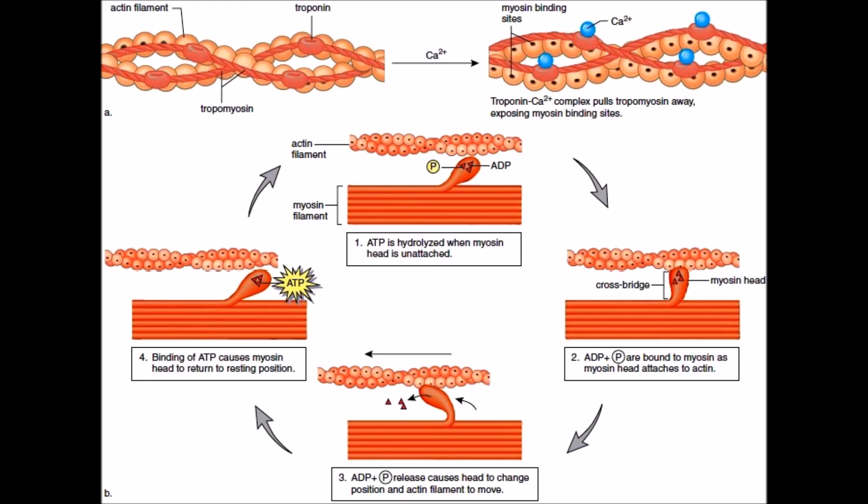When you die, your body stops producing ATP. Since ATP is what moves the myosin and your thin filament, this causes your body to lock as your muscles are constantly being contracted.